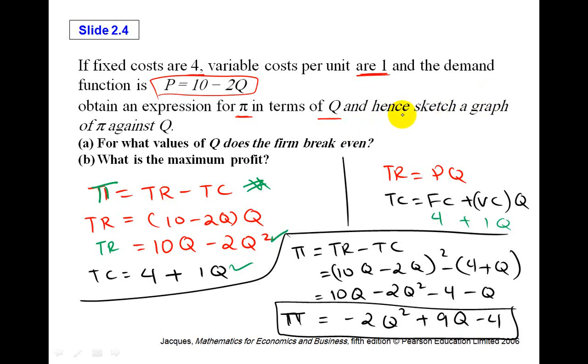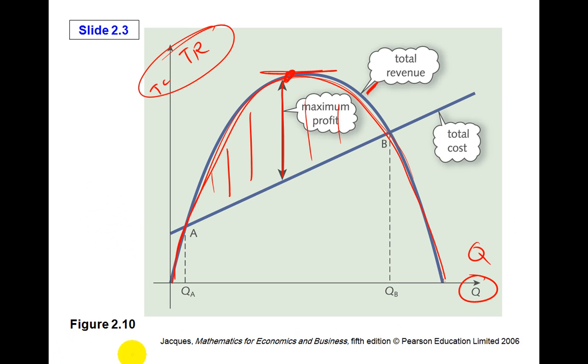Next, here we want to sketch the graph of pi against Q. So for what values of Q does the firm break even? What's the maximum profit? First, let's discuss what is the firm break even? What's the firm break even? Firm break even is when total revenue is 0. That means you don't have any profit. So I'll go to two sketches. First, let's take our formula.